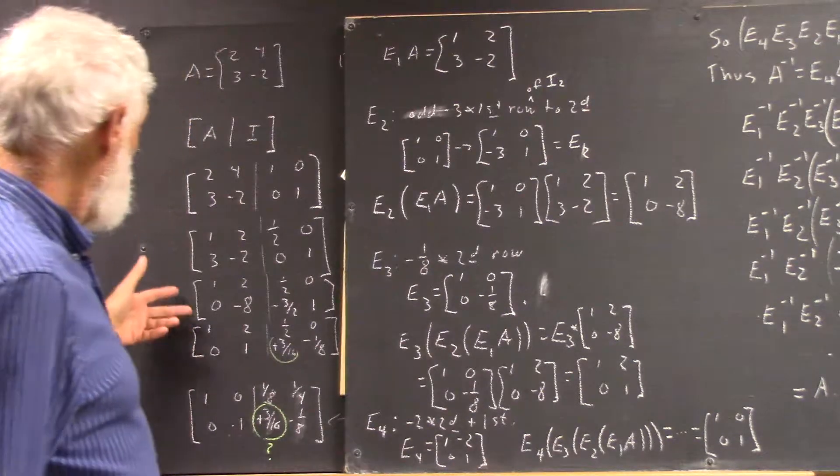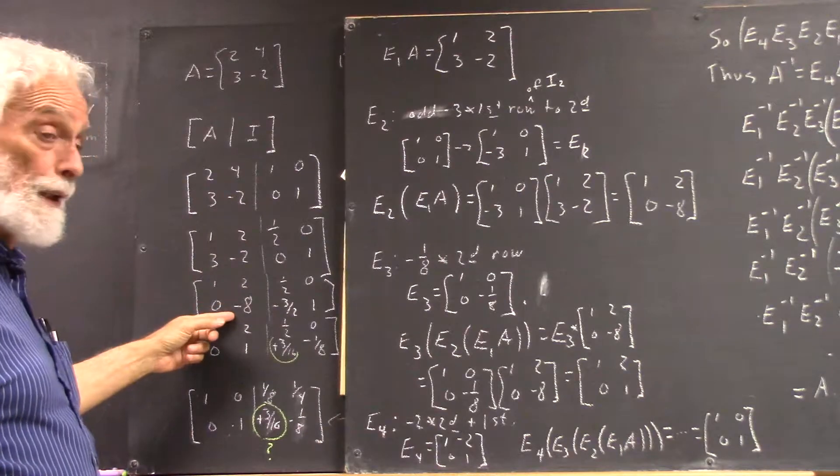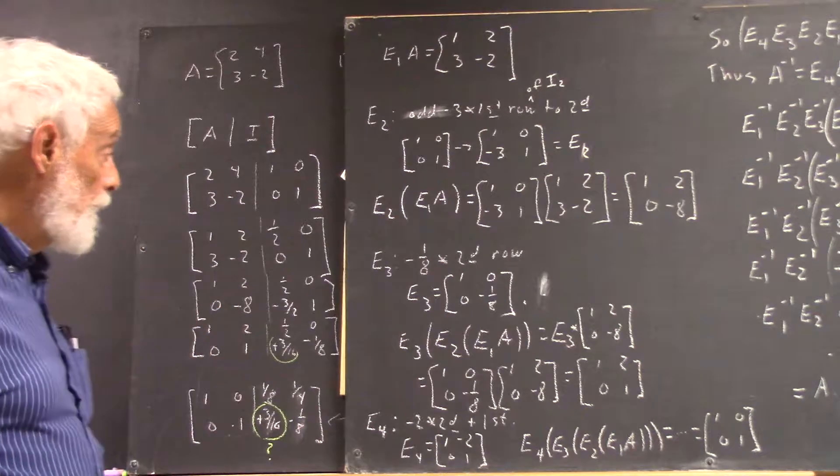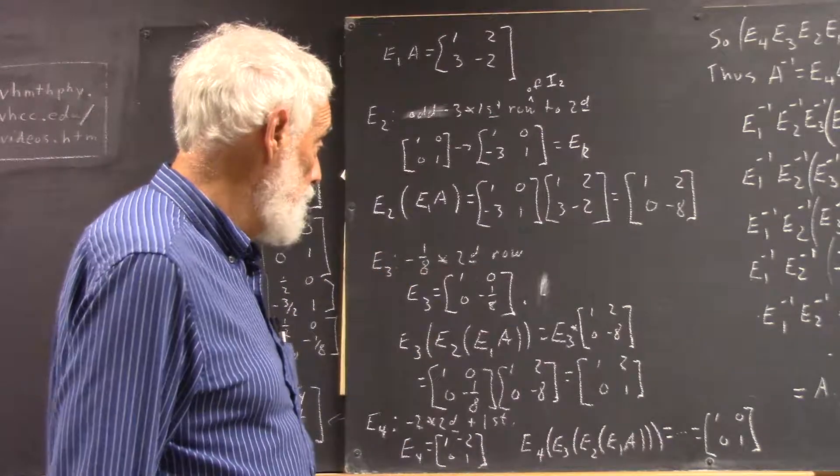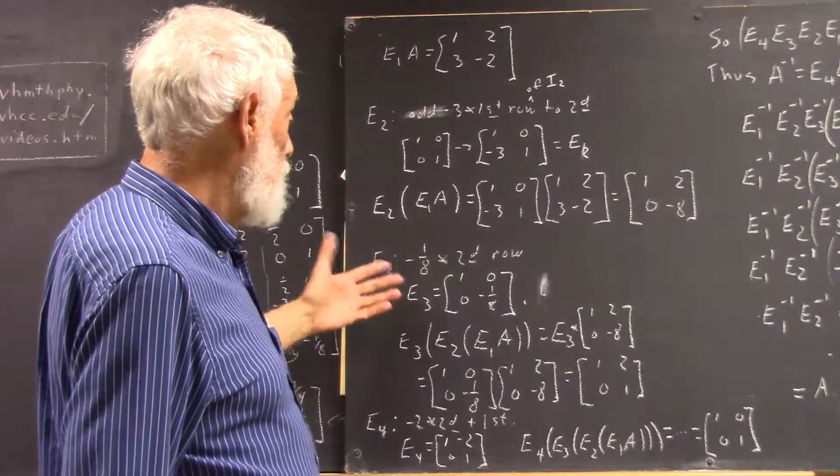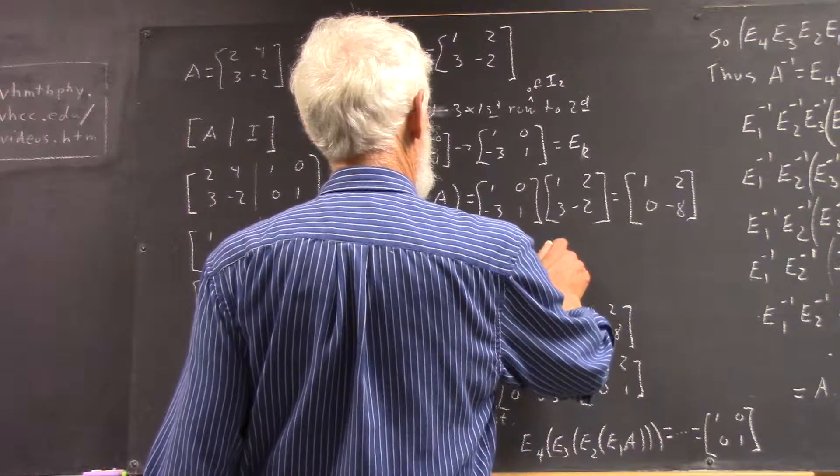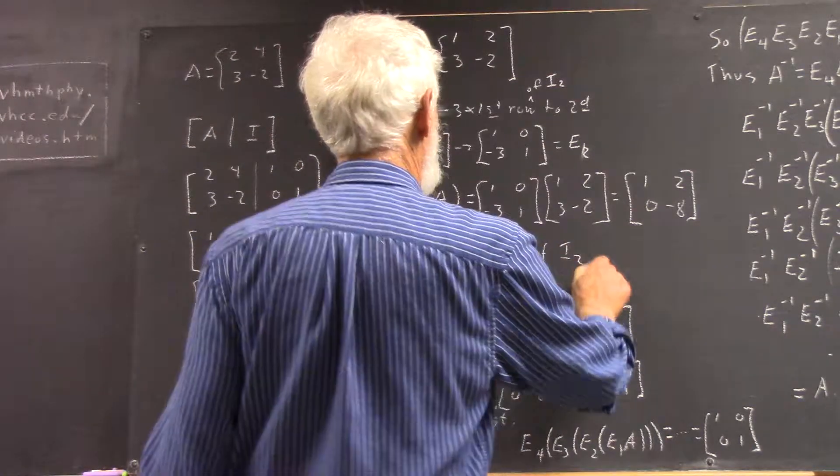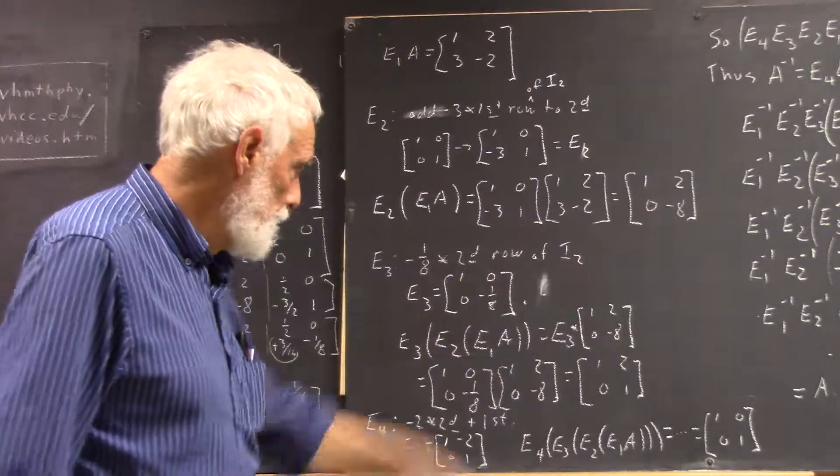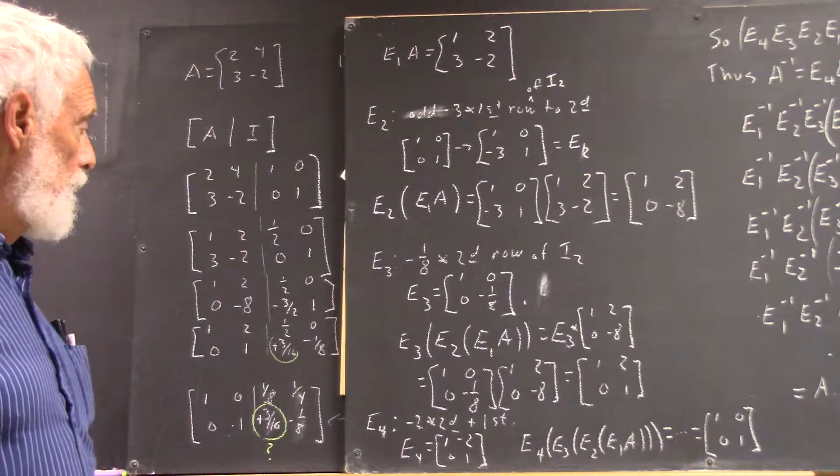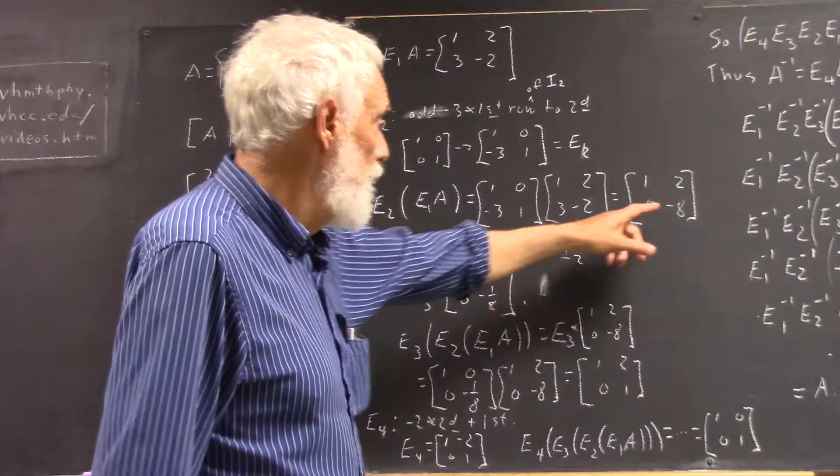What did we do next? We multiply this matrix, the second row of this matrix, by negative one-eighth. So, we multiply negative one-eighth by the second row of the identity matrix. Now, write it above I2, and we get this. Second row is, you know, zero, one. We multiply, we get zero, negative one-eighth. That's our E3 matrix, and we multiply that by what we have here.